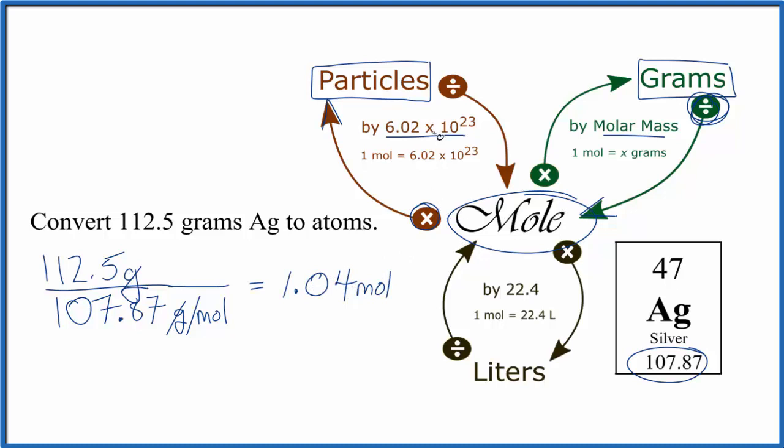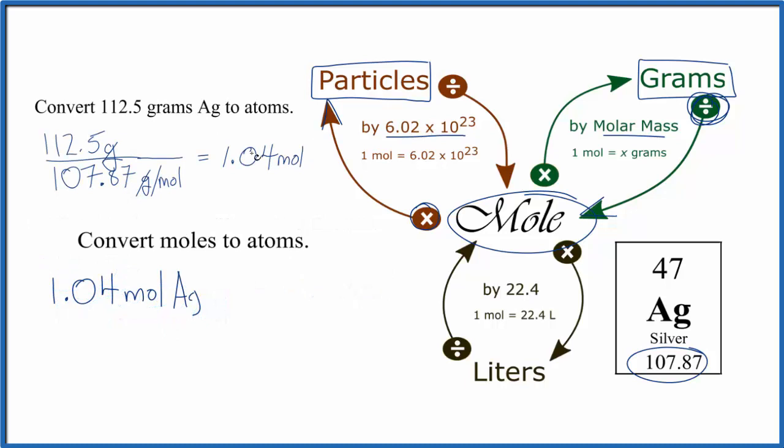Now that we have moles, we multiply by Avogadro's number to get atoms. We have our 1.04 moles of silver from here. We multiply by Avogadro's number, which tells us we have 6.02 times 10 to the 23rd atoms in one mole. Moles cancel out, we're left with atoms. We get 6.26 times 10 to the 23rd atoms of silver. That's in 112.5 grams of silver.